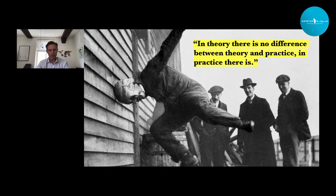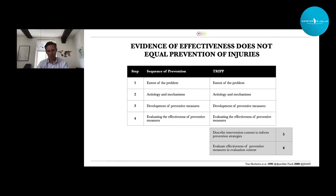But we've learned already that simply having evidence that prevents injuries doesn't really prevent injuries. So that's why in 2006, at the first injury prevention conference in Oslo, Caroline Finch proposed two additional steps to the Sequence of Prevention — the TRIP model. She basically said it's good to have evidence, but if athletes do not use it, we will not prevent any injuries. So we need additional steps. We need to implement our preventive evidence into an athletic context to make the athletes use it.